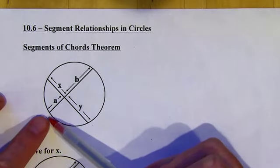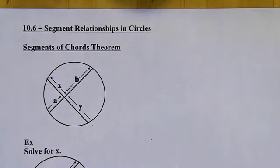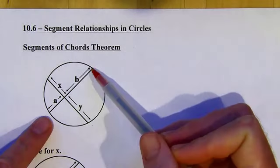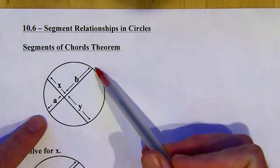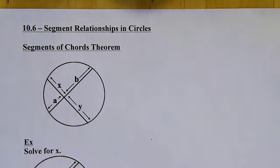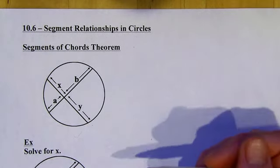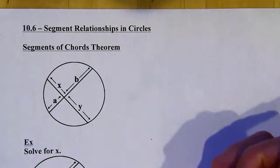A chord is a line segment that connects two points on a circle — it may be a diameter or not, but it always connects two points on a circle. When we have two chords in the same circle that intersect, there's a relationship between the smaller segments that they cut each other into.